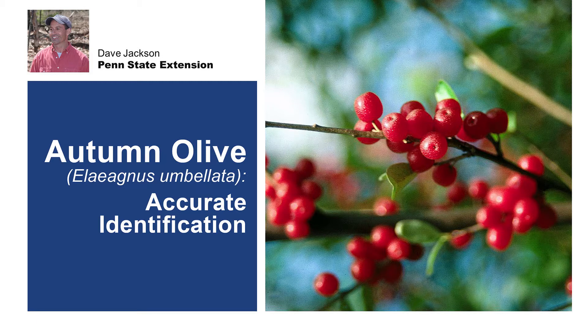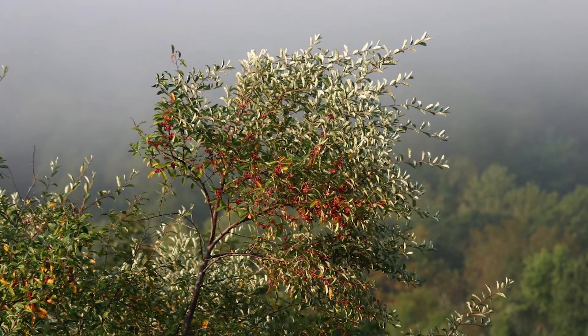Autumn Olive is an invasive ornamental shrub native to Asia. It was first introduced to North America in the mid-1800s. The silvery foliage, showy flowers, and colorful berries made it popular in landscaping. It was also planted extensively in natural areas to provide erosion control, windbreaks, and wildlife food.